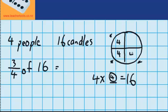4, 4, 4 and 4. And you can see there's an even amount in each quarter. And if I add these 4's together, I get 16.